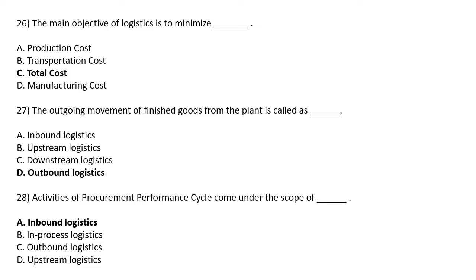The outgoing movement of finished goods from the plant is called as — Option A: Inbound Logistic, Option B: Upstream Logistic, Option C: Downstream Logistic, Option D: Outbound Logistic. The correct answer is Option D: Outbound Logistic.